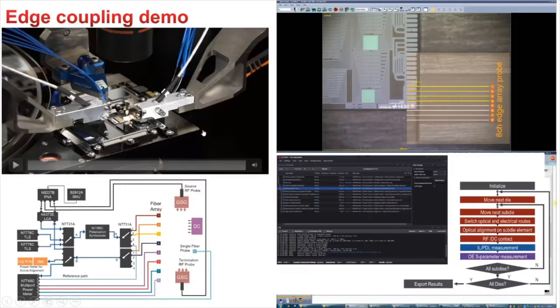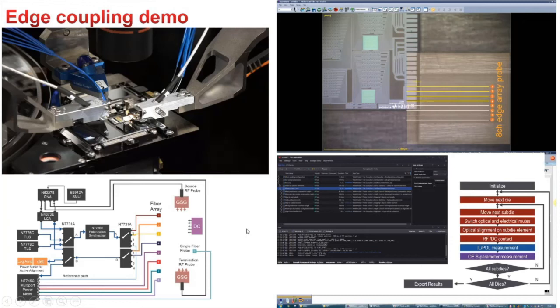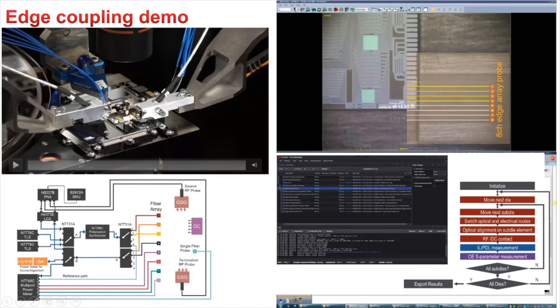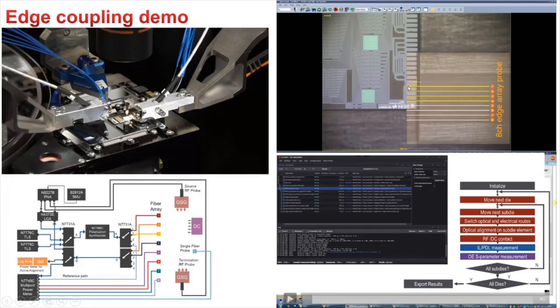Now, let me show you a demo here. We have an element on this auxiliary chuck with dies here, and we have the same as a top camera. This is from the side, this is from the top. You will see basically this is an array, a fiber array, and this moves through these edge elements, edge couplers.